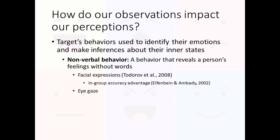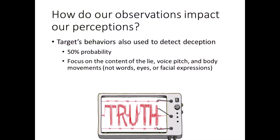The target's eye gaze is another nonverbal behavior we use to make inferences about their emotional state. For instance, if they are prone to gaze disengagement, or a lack of eye contact, we tend to form a negative impression of them. So, just as you've probably been told many times, maintaining eye contact is important to our social interactions. We also observe the target's behaviors to decide whether they are lying or telling the truth. However, humans are not great lie detectors. An overwhelming amount of scientific data indicates that we have about a 50% chance of correctly identifying whether someone is lying to us.